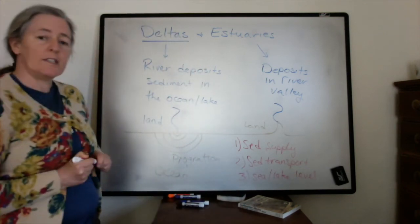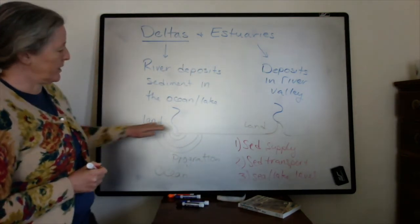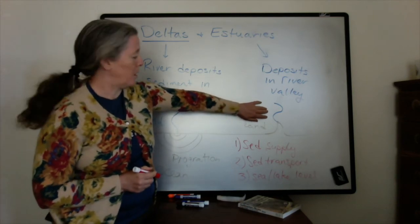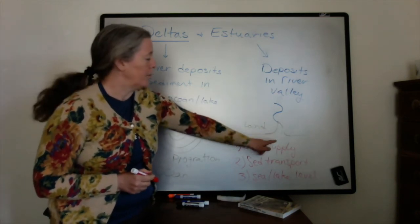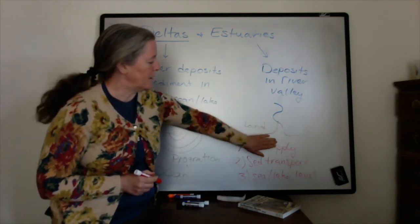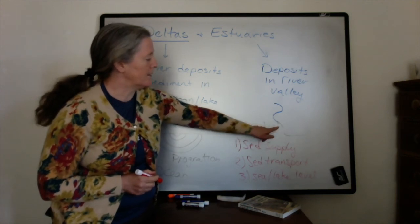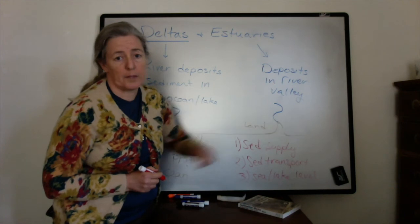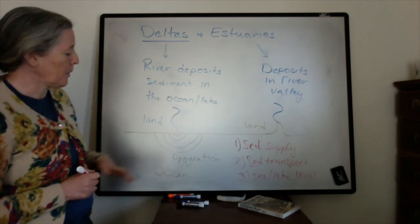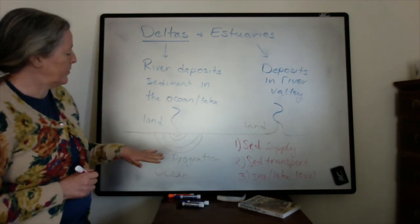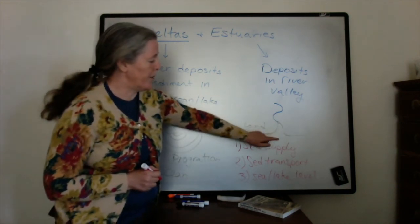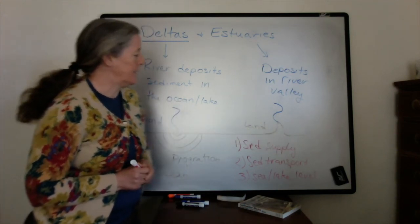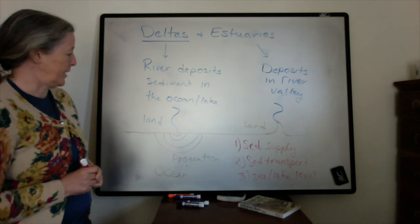If sea level starts going up very quickly, even a river with a moderate sediment supply can get flooded because the lake level is rising. And if this valley doesn't get filled entirely with sediment, it'll end up getting flooded. If sea level or lake level goes down, there's less area that needs to be filled with sediment to keep the river valley from being flooded.